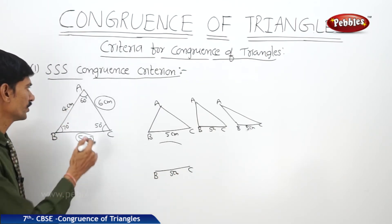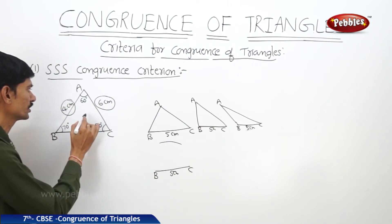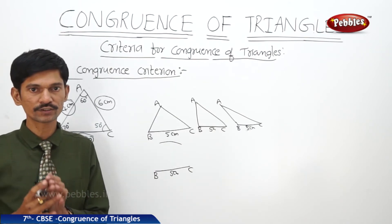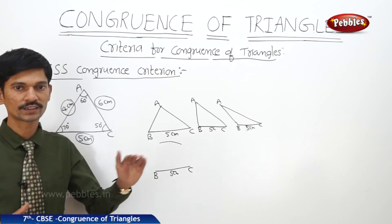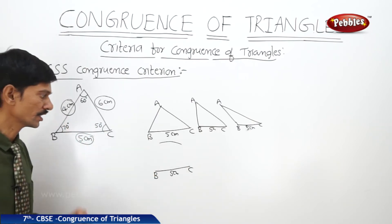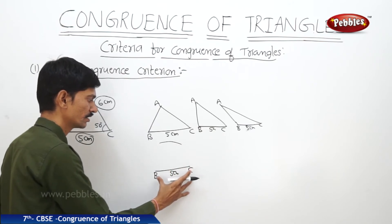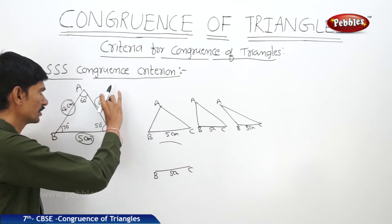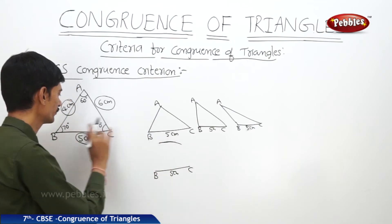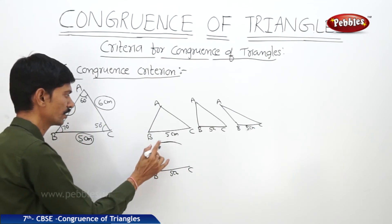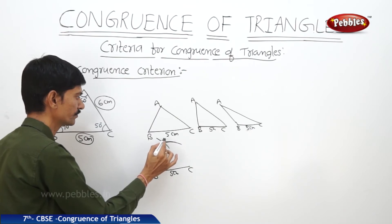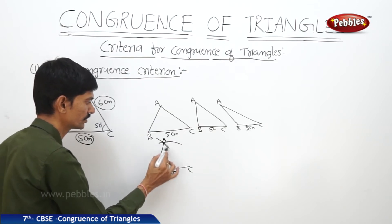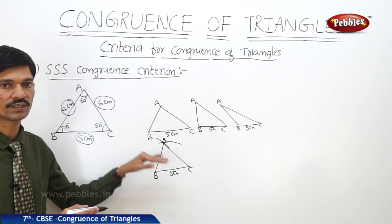Now if you are given all three sides — 4 centimeters, 5 centimeters, and 6 centimeters — you are able to draw the exact copy. First, draw line segment BC of 5 centimeters. Then with C as center and 6 centimeters radius, draw an arc. With B as center and 4 centimeters radius, draw another arc. Mark A as the point of intersection of these two arcs, then join AB and AC. You get the exact copy of the original triangle ABC.